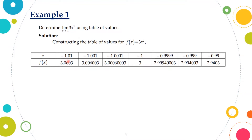negative 1.01, negative 1.001, negative 1.0001, negative 1, negative 0.9999, negative 0.999, and negative 0.99. As these are the values of x, we will be evaluating the values of f(x) for each respective value of x.